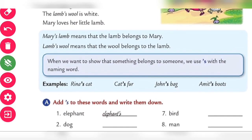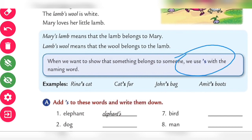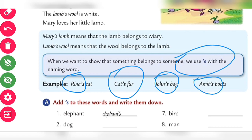When we want to show that something belongs to someone, we use the apostrophe 's' with the naming word. For example: Rina's cat, cat's paw, John's bag, Amit's boots.